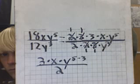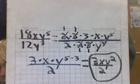Now your equation is simplified to 3 times x times y to the 5th over 2y to the 3rd. Now you subtract y to the 3rd from y to the 5th. That simplified is 3xy squared over 2.